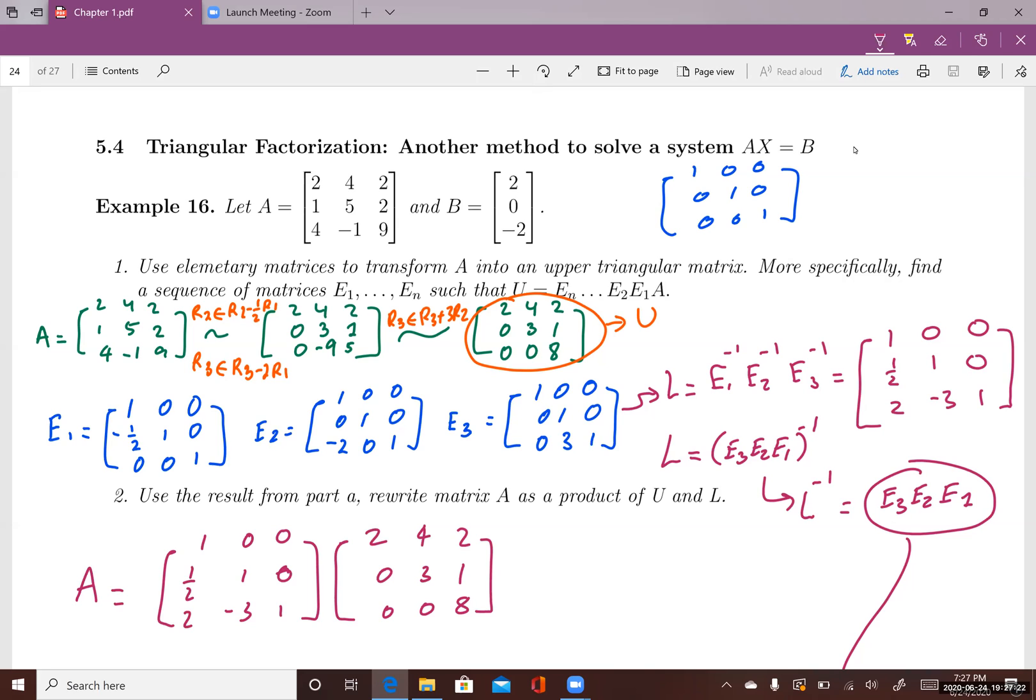The lower triangular matrix, called L, will be equal to E1 inverse times E2 inverse times E3 inverse. And this is the lower triangular matrix.